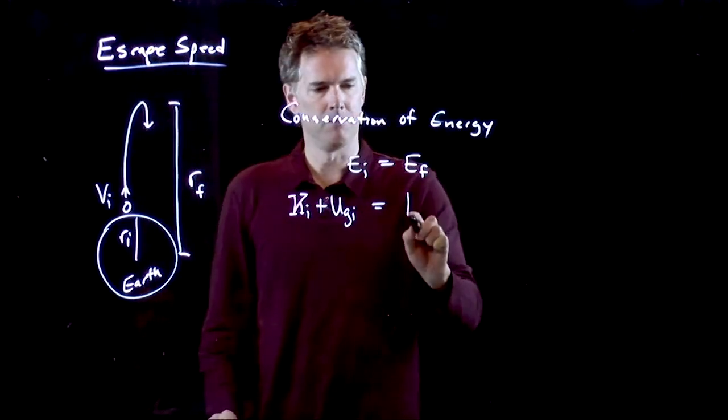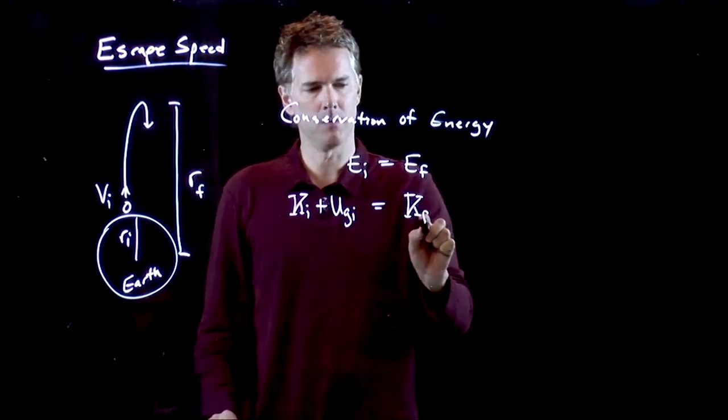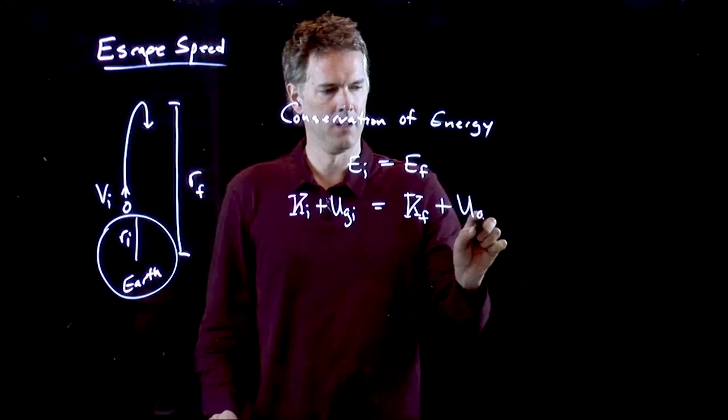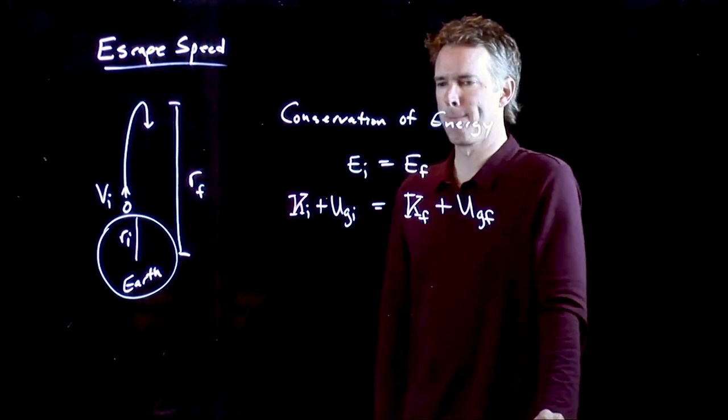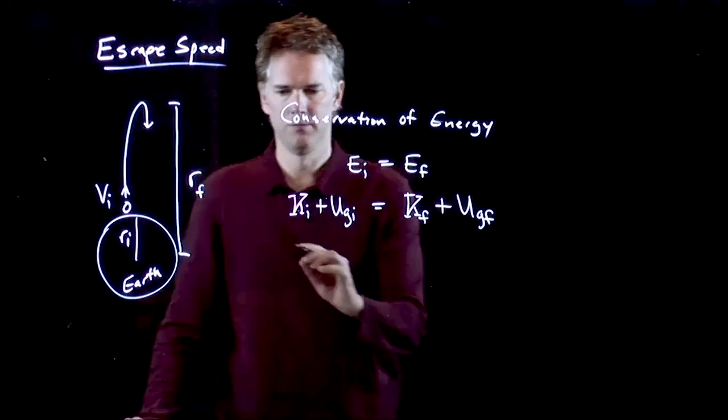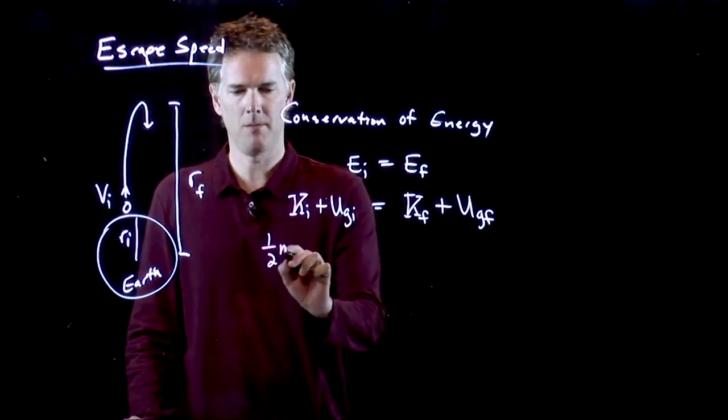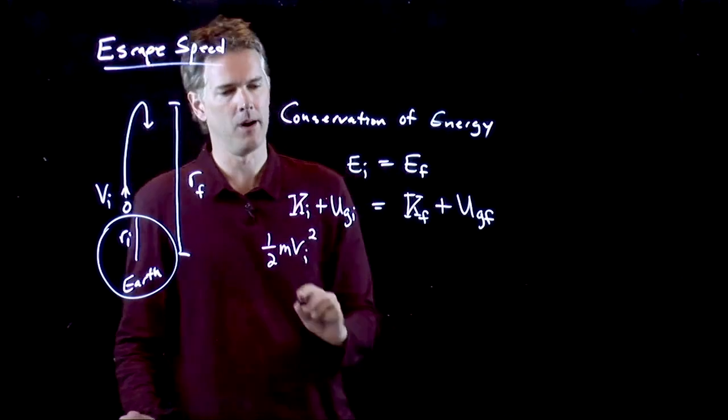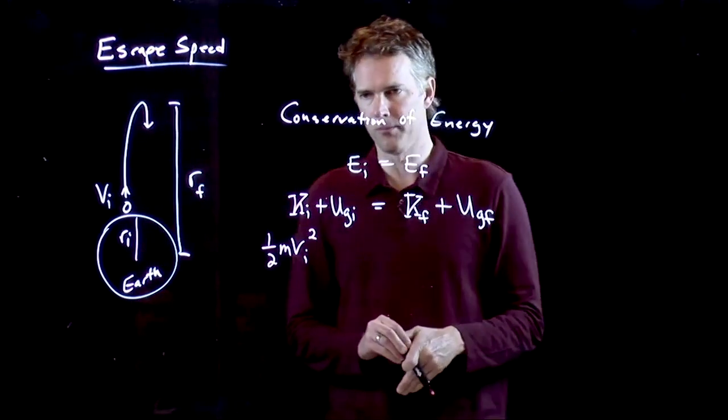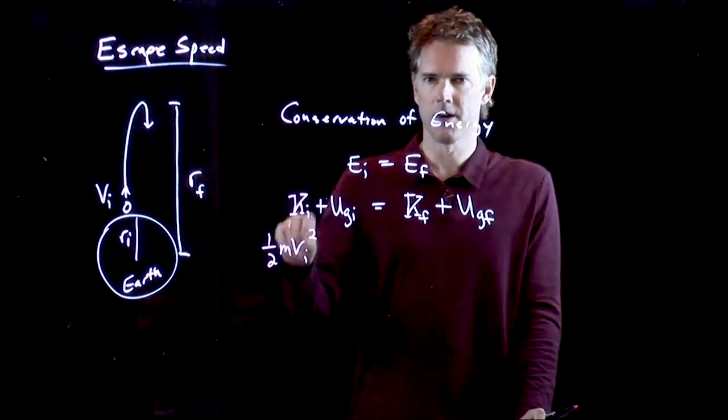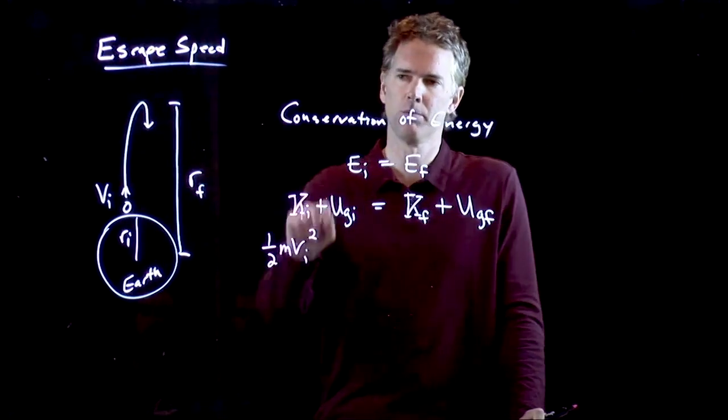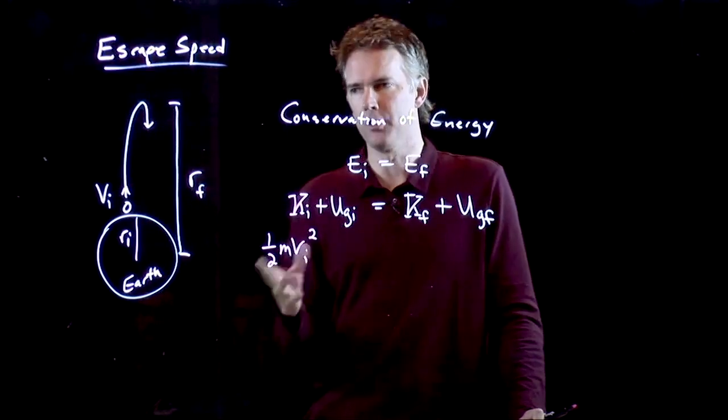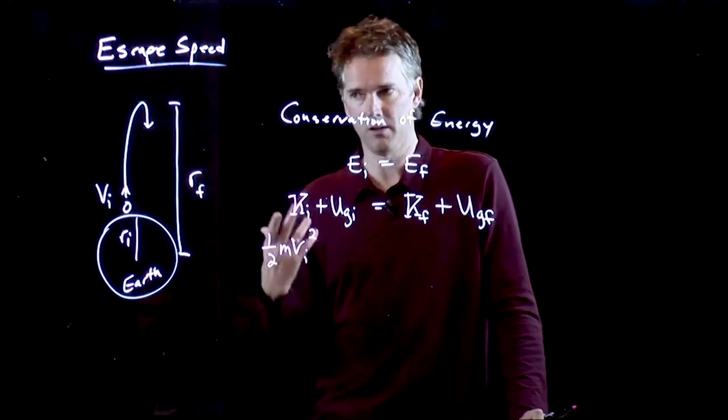At the top, maybe it has kinetic, maybe not. We'll cross that out in a second. And it certainly has gravitational potential energy. Kinetic energy we know. That's just one-half m vi squared. That is always the kinetic energy of something until we start talking about relativity. Once you get to speeds that start to approach the speed of light, you have to do things a little bit differently, thanks to Einstein.